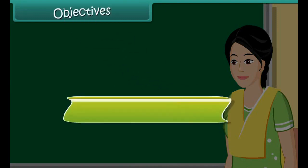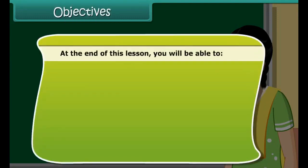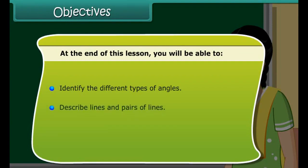Objectives. At the end of this lesson, you will be able to identify the different types of angles, describe lines and pairs of lines, and explain parallel lines.